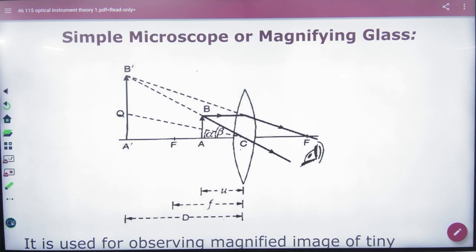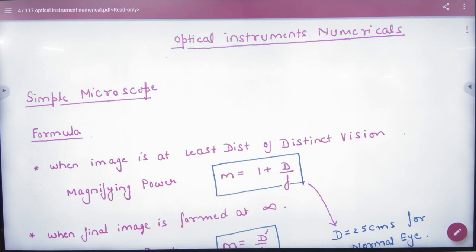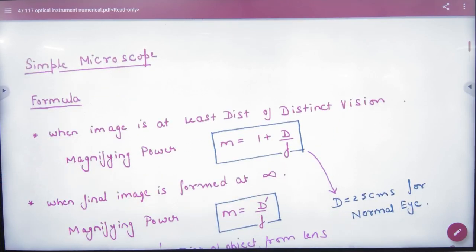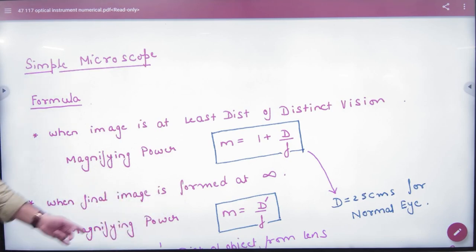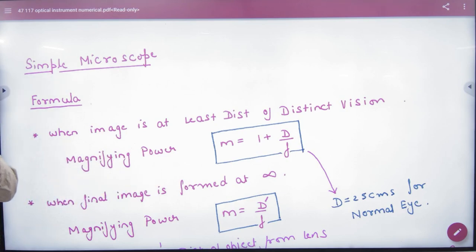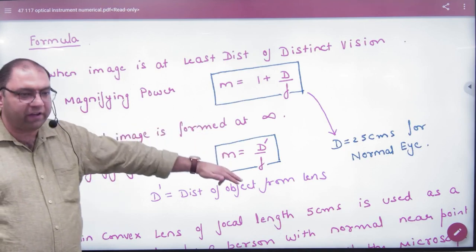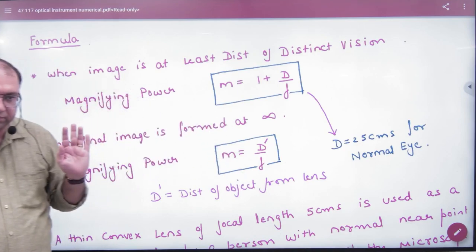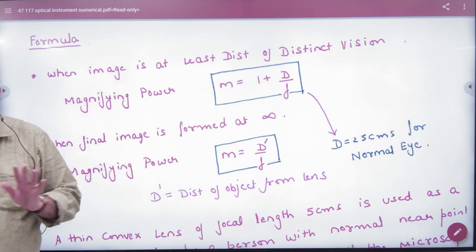In these two cases, there are two formulas. For the simple microscope, when the image is at the least distance of distinct vision, the magnifying power formula is 1 plus D by F. When the image is formed at infinity, the formula is D by F. By default, capital D equals 25 cm.